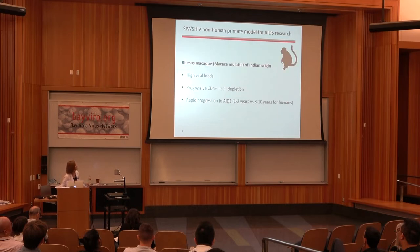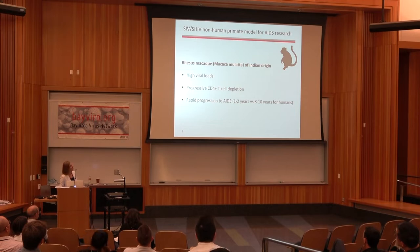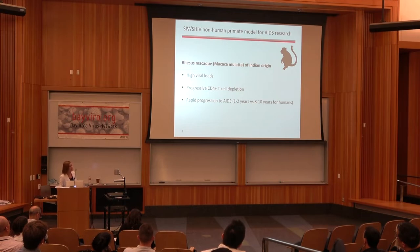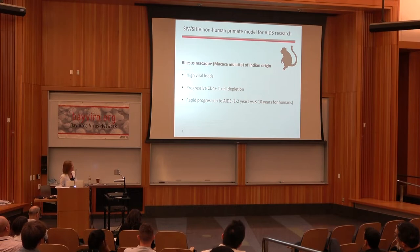That's in vitro data, so how do we translate that into an actual therapy? The well-established model used in the field relies on non-human primates — in our case rhesus macaques of Indian origin. When these animals are infected with the simian homolog SIV, or SHIV virus which I'll mention in my last story, the virus replicates to high viral titers and leads to progressive loss of CD4 T cells and eventual progression to AIDS. Disease progression in these animals is more accelerated compared to human disease.